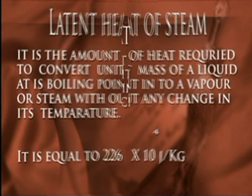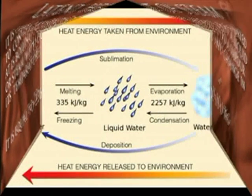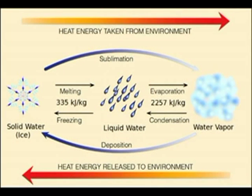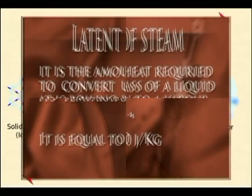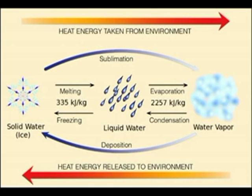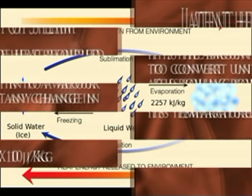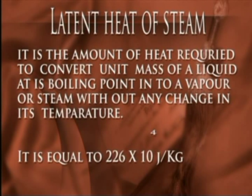Latent heat of evaporation or steam of any liquid is the amount of heat required to convert a unit mass of liquid at its boiling point into vapour or steam without any change in temperature, and it is equal to 2.26 × 10⁴ joules per kilogram.